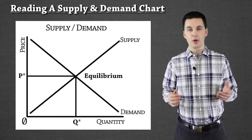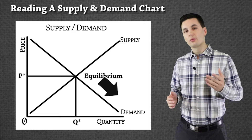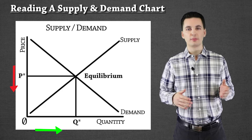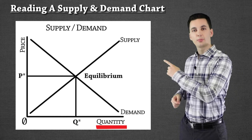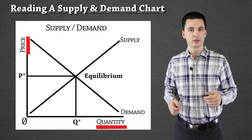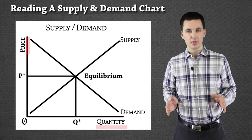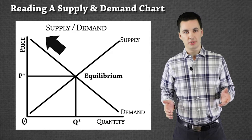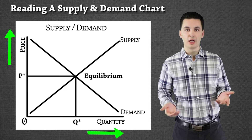When looking at a supply and demand chart, there are a couple things we can see. One, demand is always downward sloping because of the law of demand — as prices go down, demand will go up. On these charts, quantity will always be on the bottom and price is always going vertical. Supply, on the other hand, is upward sloping because of the law of supply — as prices go up, people are willing to sell more because they can make more money.